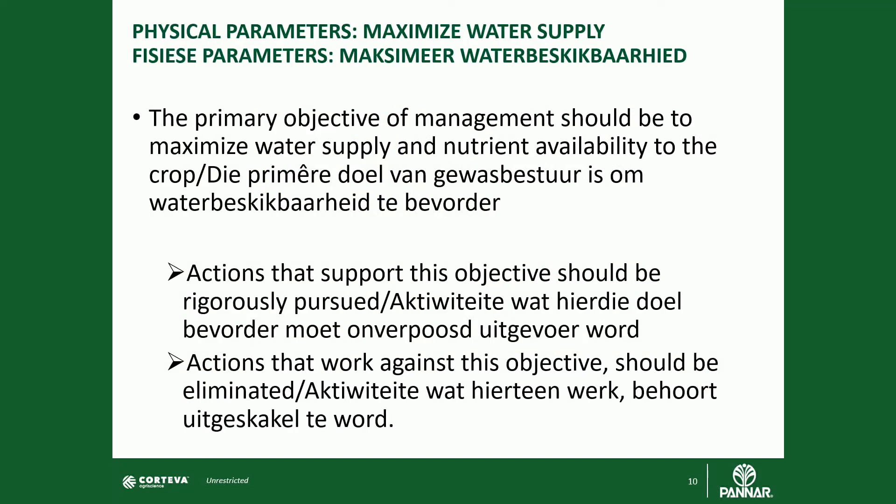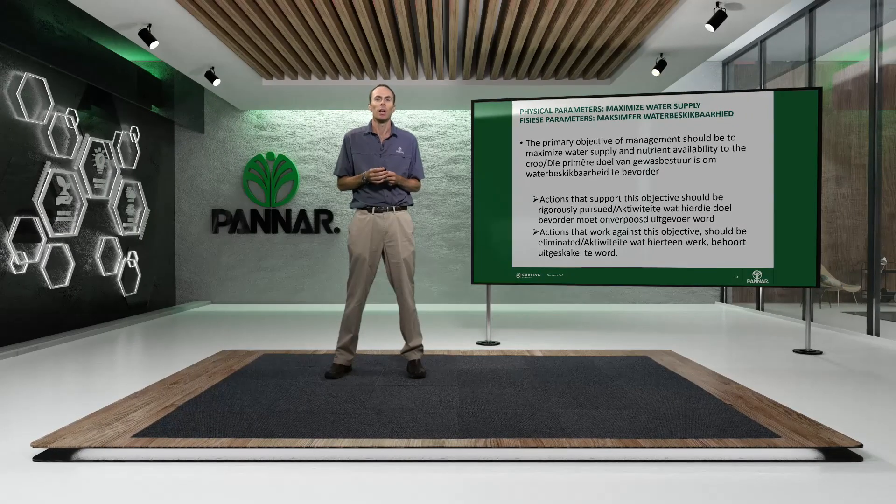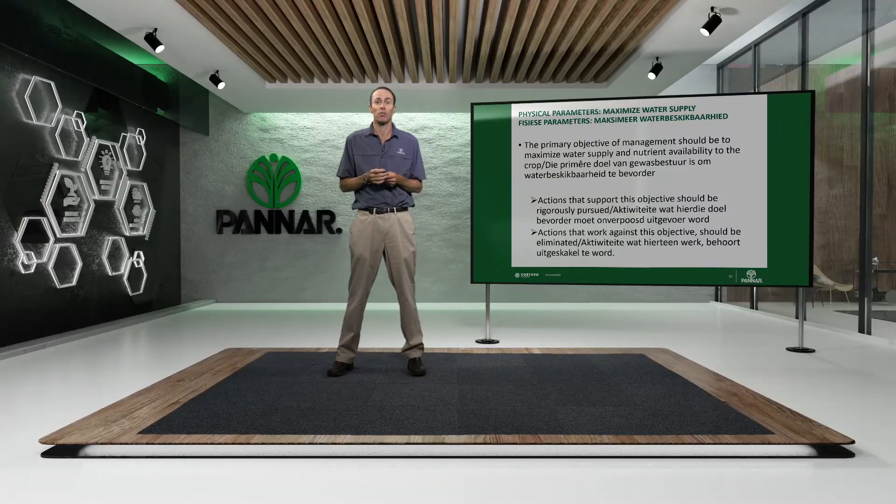While each farmer must decide for themselves what is the best practice for their situation on their farm, I challenge you to consider the following. The primary objective of management should be to maximize water supply and nutrient availability to the crop. Actions that support this objective should be rigorously guarded and pursued, and actions that work against this objective should be eliminated or significantly reduced. If you're able to sort out your fertility through good soil testing, fertilizing to the threshold levels of each element, and providing a good soil structure for water infiltration and root penetration into the soil, hopefully we will be able to increase the productivity of every hectare on your farm. Thank you.